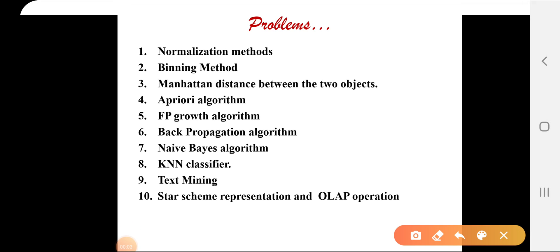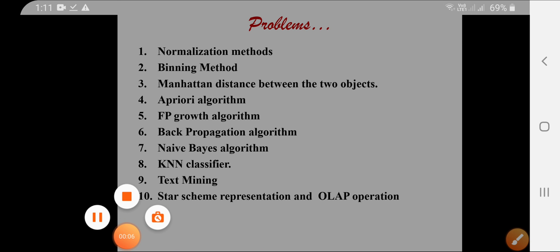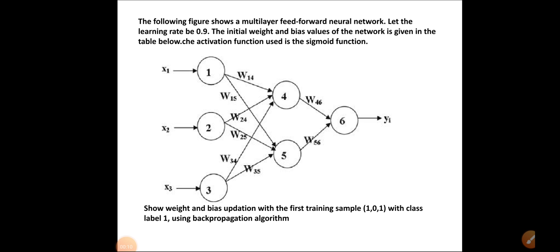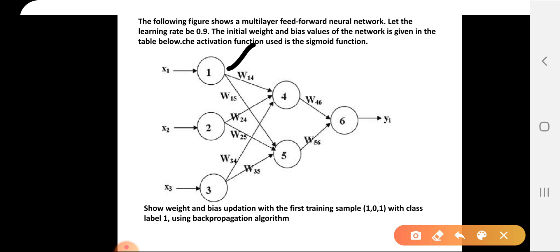The next problem is the backpropagation algorithm. We are given a multi-layer feed-forward network with a learning rate of 0.9. We'll work out the same problem with the given initial weight values and bias values. We have to find the weight and bias adaptation for the first training sample 1-0-1 with class label 1, using the backpropagation algorithm.